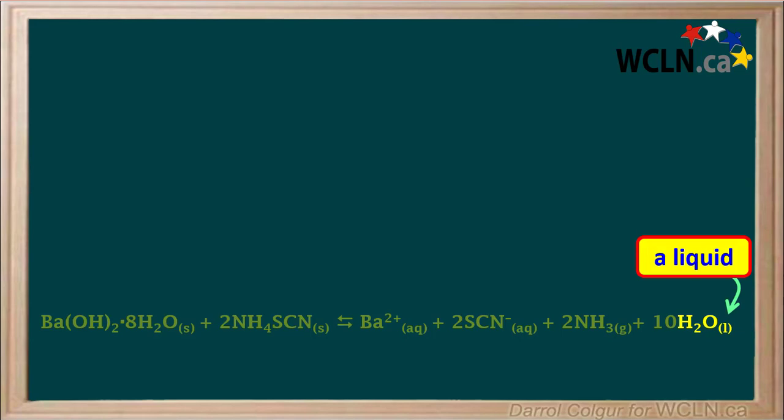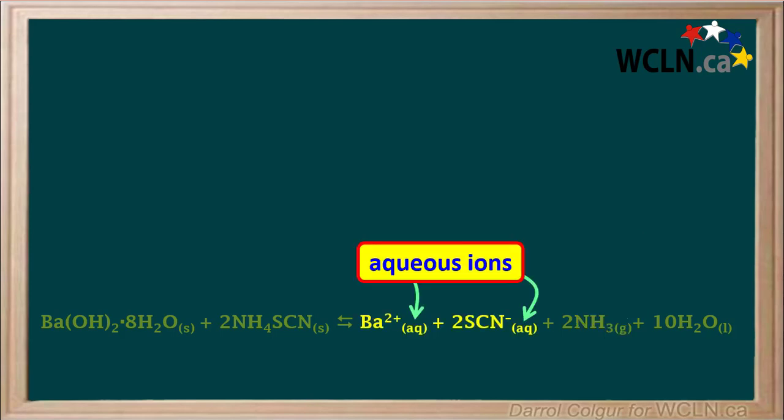Now we'll look at the products. Notice that one of our products is liquid water. Liquids have higher entropy than our solid reactants. Also notice that one of our products, ammonia, is a gas. Gases have much more entropy than our solid reactants. The other products are the aqueous ions Ba²⁺ and SCN⁻. Aqueous ions also have much greater entropy than solids.